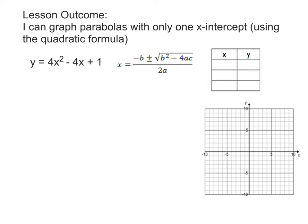Let's go ahead and start this problem as we've been doing a lot this unit. We're going to put a 0 in for y, and then we get 0 equals 4x squared minus 4x plus 1. We are going to solve for x by using the quadratic formula, which is written off to the right here.